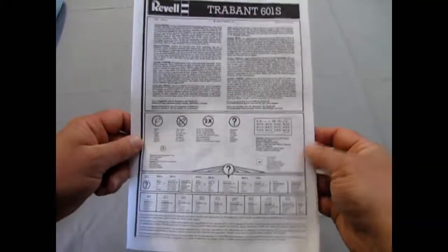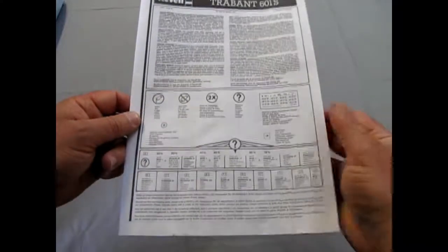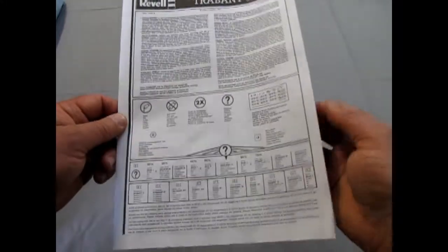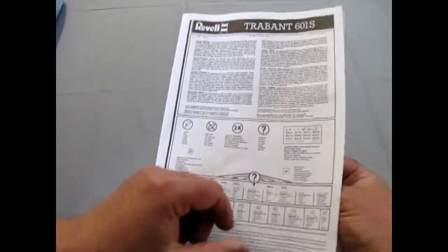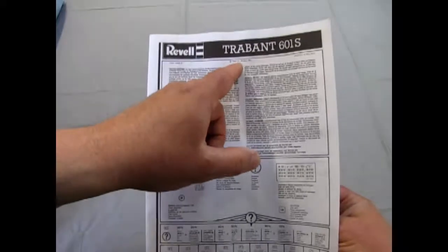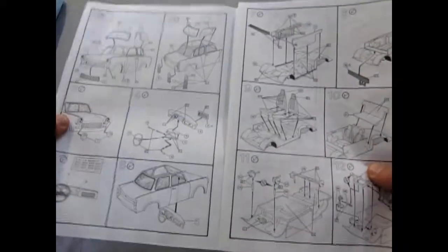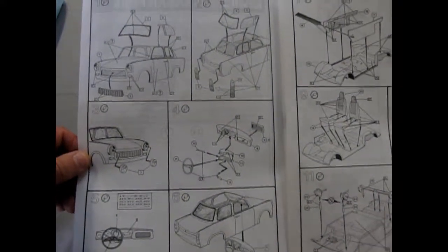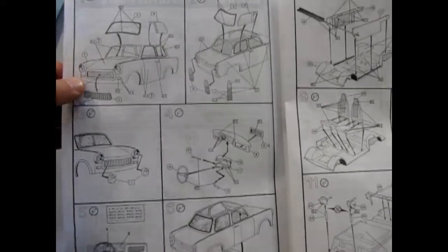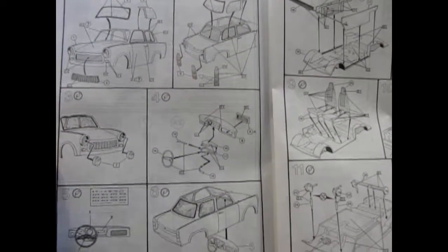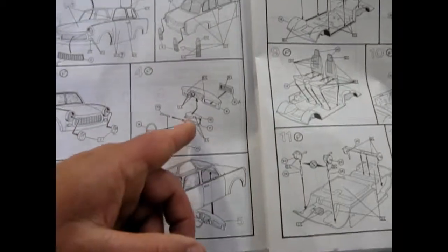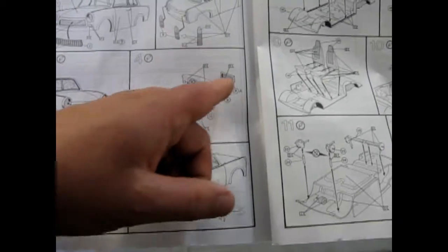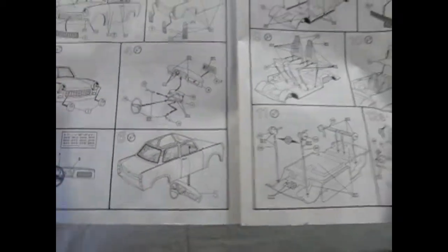Now, this is a Revell of Germany kit, which is always nice. It comes with the little flags telling you which colors. So as you go through your instruction sheet, you actually get to see what colors to paint things. It was introduced in 1990 by Revell. And like I said, this was actually sent to me from a pen pal I had pre-internet days from Germany. There's our little body with the glass going in and the headlights.